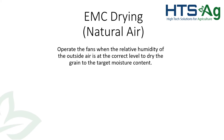A few things to note about EMC drying — equilibrium moisture content drying with natural air. We operate the fans when the relative humidity of the outside air is at the correct level to dry the grain to the target moisture content. If we run the fans when the air is very dry, we end up over-drying the bottom of the bin and maybe not getting the top of the bin dried.